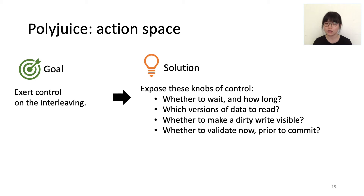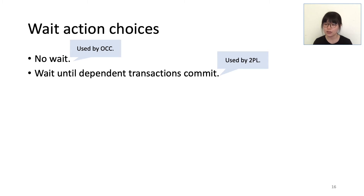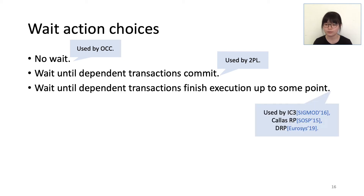Second, for a read operation, which version of the data to read? Third, for a write operation, should it make the write visible to other transactions? And finally, should it validate after the access? For wait actions, one can choose not to wait at all — this is the choice of optimistic concurrency control. Alternatively, a transaction can wait until all of its dependent transactions commit — this is 2PL. Some algorithms like IC3, KSRP, and DRP require a transaction to wait for dependent transactions to finish execution up to some point.